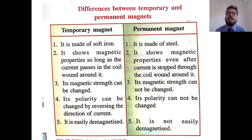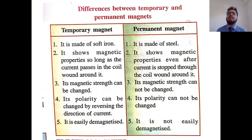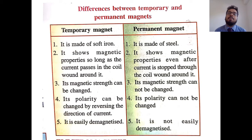The main differences between temporary and permanent magnets: First, temporary magnets are made of soft iron, whereas permanent magnets are made of steel. Second, a temporary magnet shows magnetic properties only as long as current passes through the coil around it — as soon as the current stops, the magnetic property disappears — but a permanent magnet retains its properties even after the current is stopped. Third, the magnetic strength of a temporary magnet can be changed by increasing or decreasing the current, whereas the magnetic strength of a permanent magnet cannot be changed.